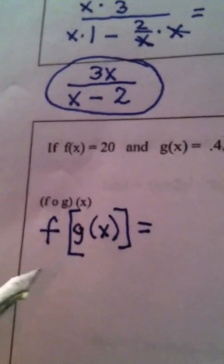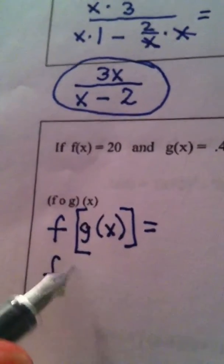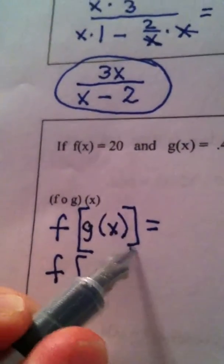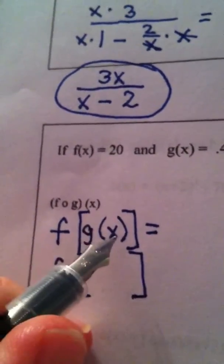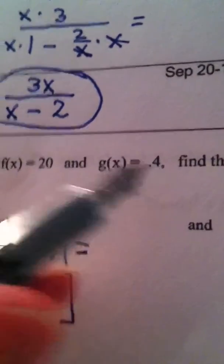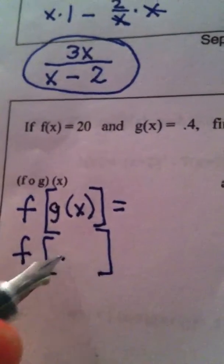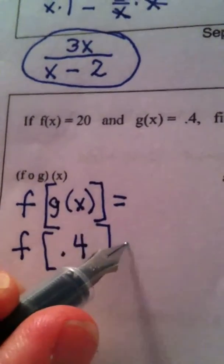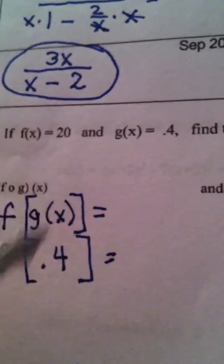Now, leave f alone. G of x. G of x is 0.4. It's a constant function. G of x is always 0.4.